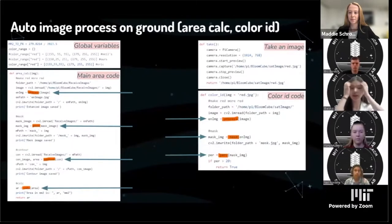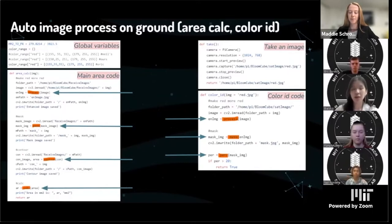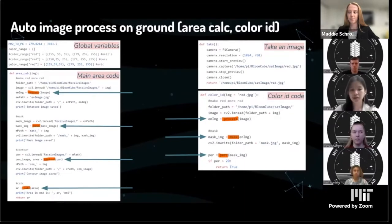Next I can talk about the automated image processing that happened on the ground, which was area calculation. By using a millimeter-squared pixel ratio, we calculated the area through an enhanced image by upping the saturation or lowering the brightness, as well as putting a mask over to show only the red parts and a contour to make it easier during the testing stage to see if the color detection worked. Other functions added were the take method — to make taking a picture easier through code — as well as the color activation code, which used area cap functions.